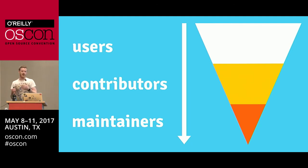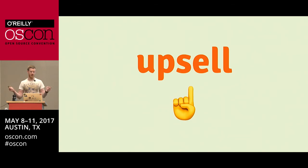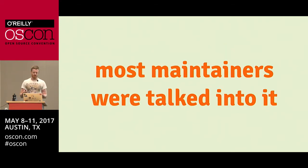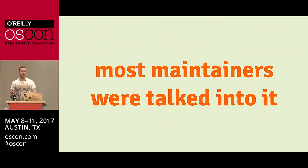The key to having more than zero contributors and more than one maintainer is the next step: upsell. So why and how do people move between these groups? The first thing I would say is that most maintainers who end up maintaining open source projects were talked into it initially. I don't know of many projects where people who proved themselves to be very good maintainers were, when they started off, saying 'me, me, I really think I should be a maintainer.'